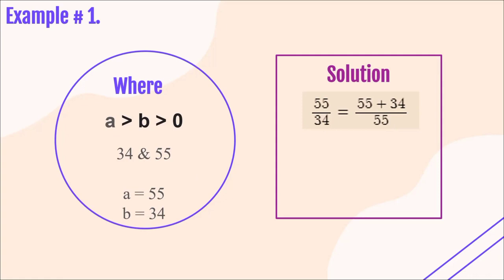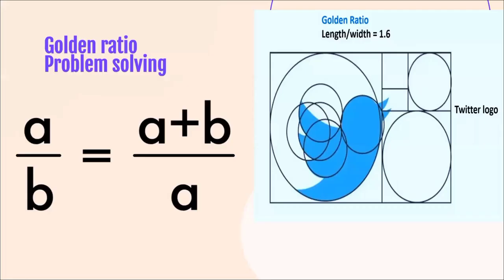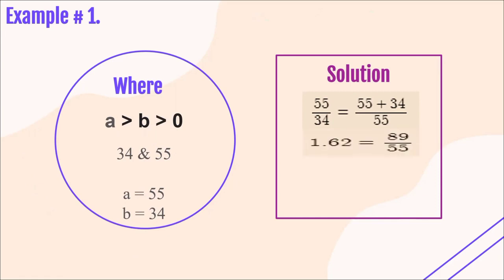Let's first solve 55 over 34, and also 55 plus 34 over 55. 55 over 34 equals 1.62. And 55 plus 34 over 55 equals 89 over 55. Then let's solve 89 over 55. The final answer is 1.62 equals 1.62.